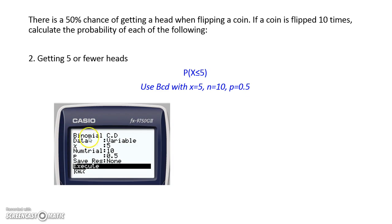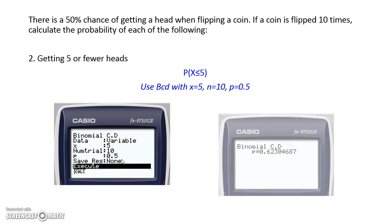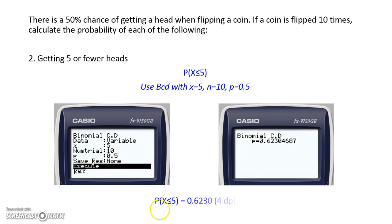Once you get into this screen, check you've got binomial CD, because that's what we use with less than or equal to. Enter x equal to 5, number of trials is 10, probability 0.5. That gives us a probability for x less than or equal to 5 of 0.6230 to 4 decimal places.